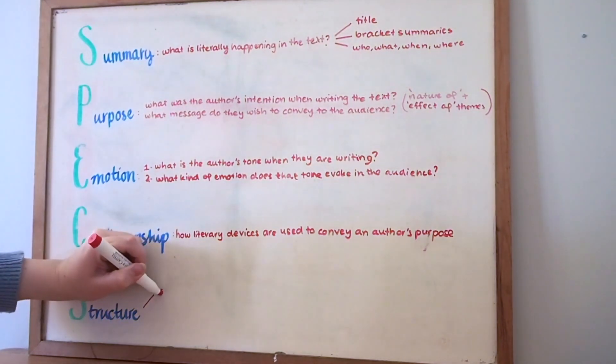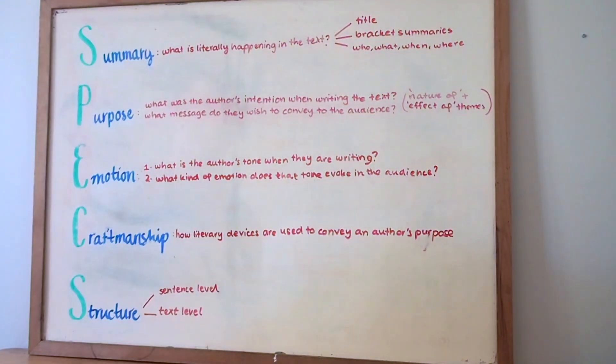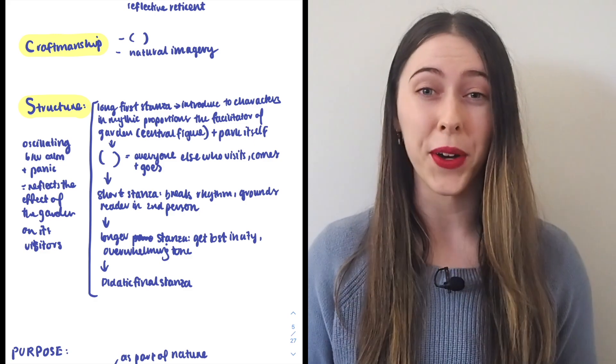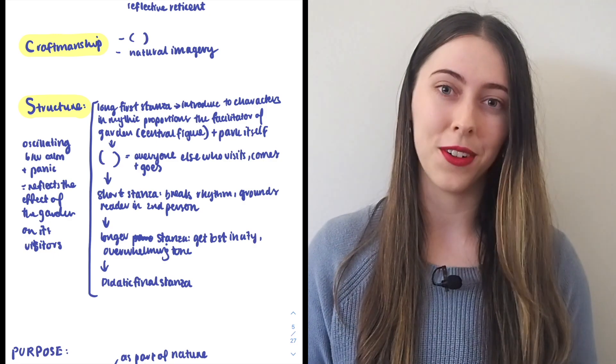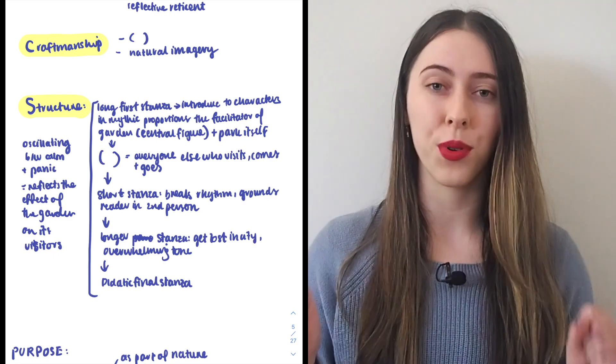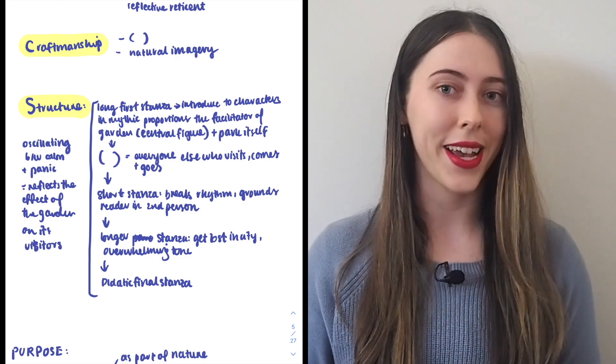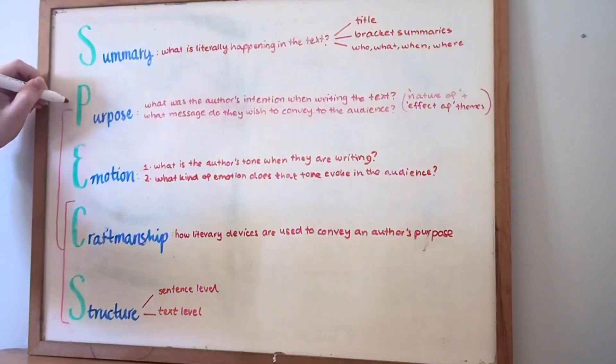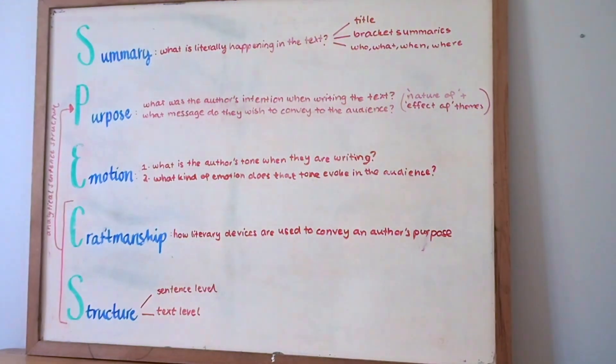So that could be at the sentence level like rhyme, enjambment, end stop lines, sentence length, etc., or it could be at the text level so tone, length of paragraphs or stanzas, tonal shifts, or my personal favorite to fall back on - the significance of presenting a specific piece of content at the beginning, middle or end of a text. After I found a technique, whether that be structure or otherwise, I would use the analytical sentence structure that I discussed in my previous video to unpack the link between the technique, its effect and the meaning.